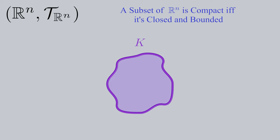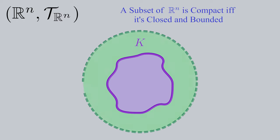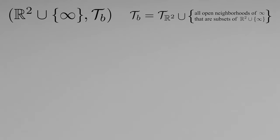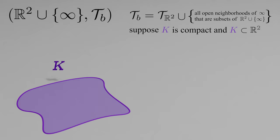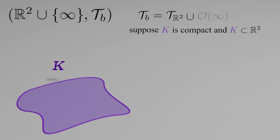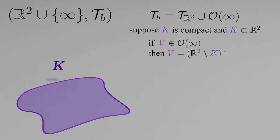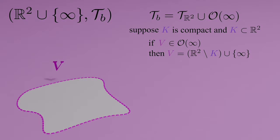Now, if we're in Euclidean space Rn with standard topology, a subset of Rn is compact if and only if it's closed and bounded. This is the Heine-Borel theorem. A set being closed just means that it contains all its limit points, and being bounded means that the size of the set is finite. Boundedness can be proven if a set fits inside of a ball. So now that we know what it means for a set to be compact, going back to our plane, suppose that K is a compact, proper subset of R2, and that these open neighborhoods of the point at infinity are contained in a set fancy O.